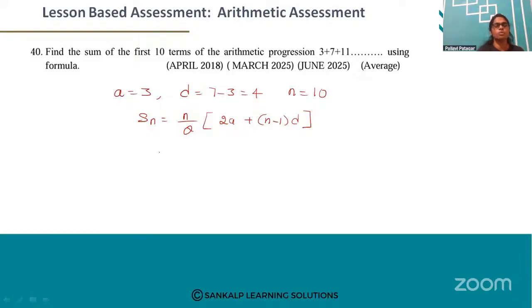Substitute the values into the formula. S10 equals 10 by 2 into 2 into 3 plus 10 minus 1 into D is 4.